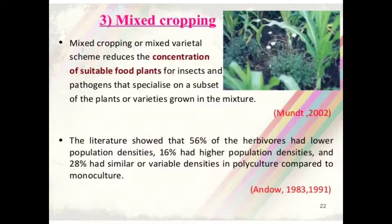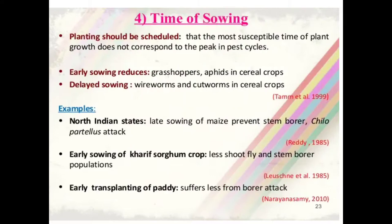The next cultural practice is mixed cropping. Mixed cropping or mixed varietal schemes reduce the concentration of suitable food plants for insects and pathogens that specialize on a subset of plants or varieties grown in the mixture. Literature shows that 56% of herbivores had lower population densities, 16% had higher population densities, and 28% had similar or variable densities in polyculture compared to monoculture.